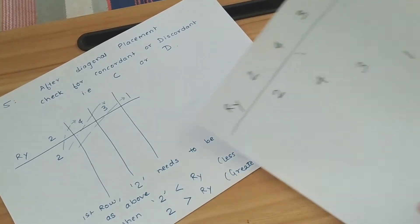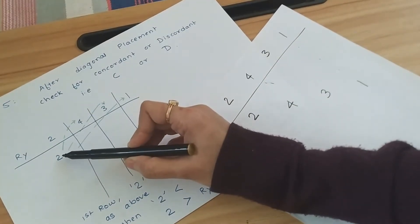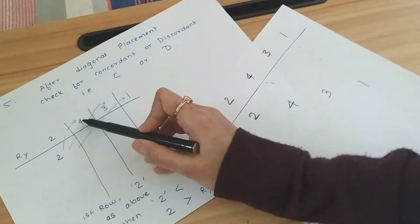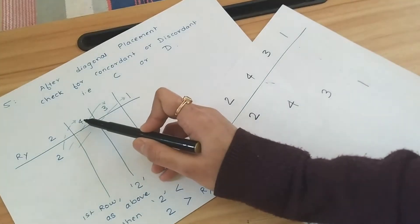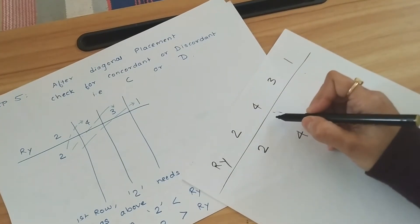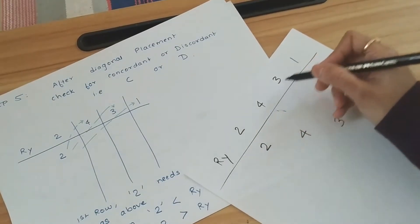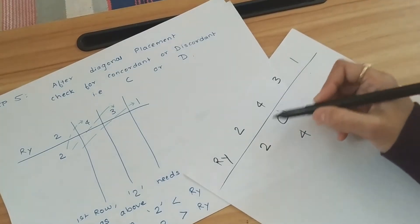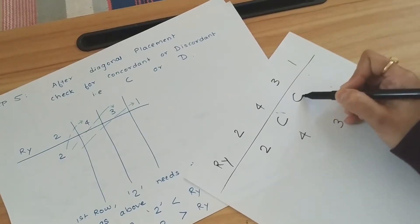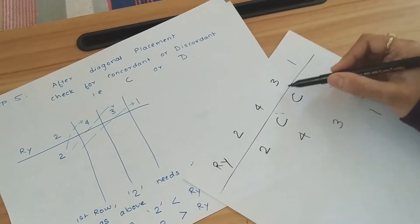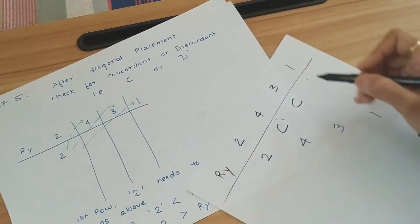In step 5, after diagonal placement, we check for concordant (C) or discordant (D). Check every diagonally placed element against the elements to its right on the same row. 2 is less than 4 → C; 2 is less than 3 → C; 2 is greater than 1 → D.